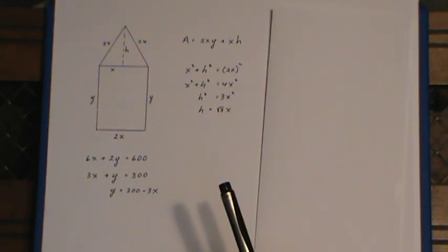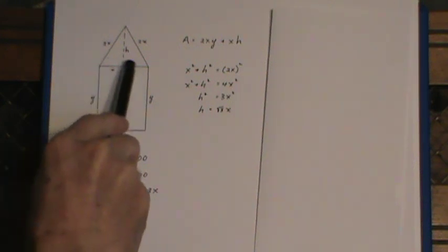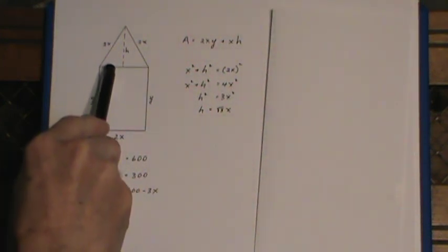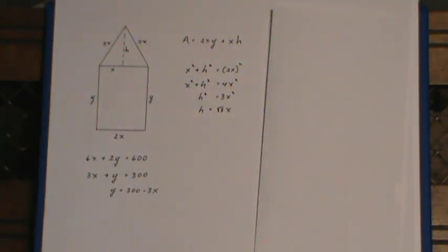Now when I drew this diagram I decided to put 2x along here because I knew I was going to have to take half of this base at some point because I have to figure out the area of the triangle. This just keeps my numbers a little simpler.